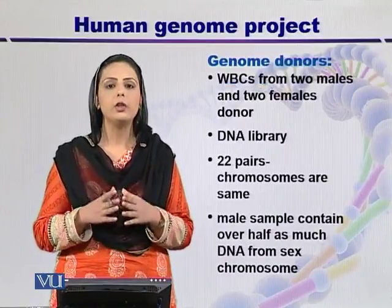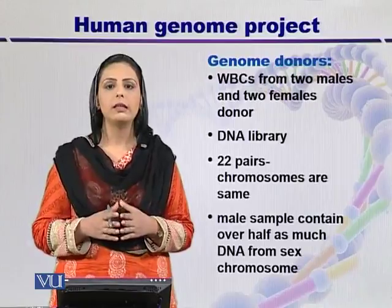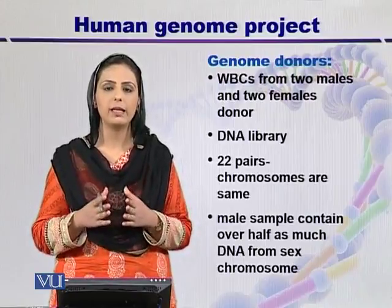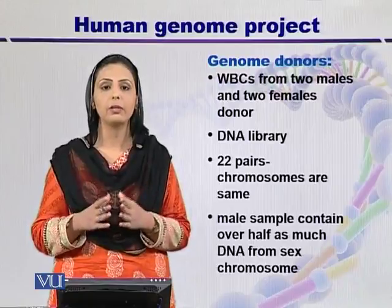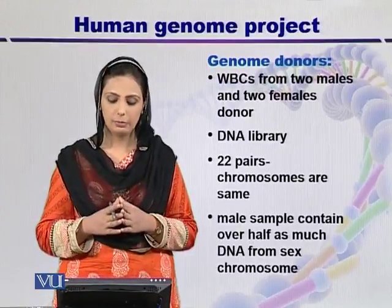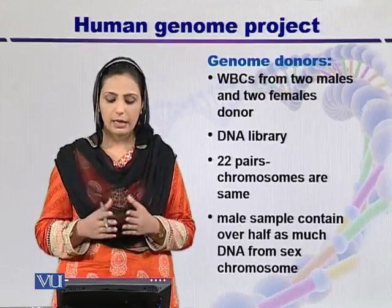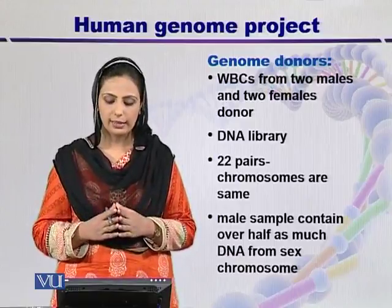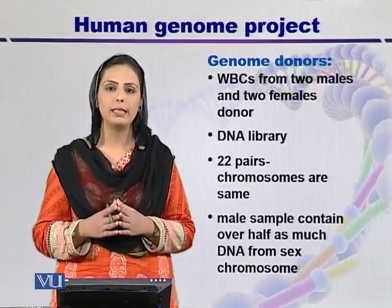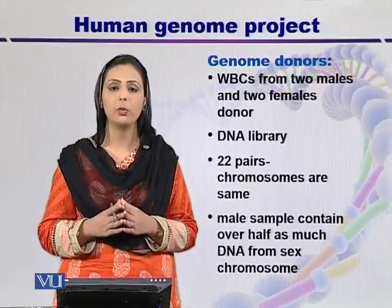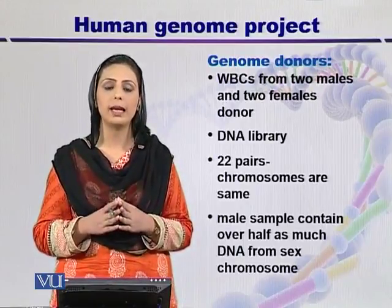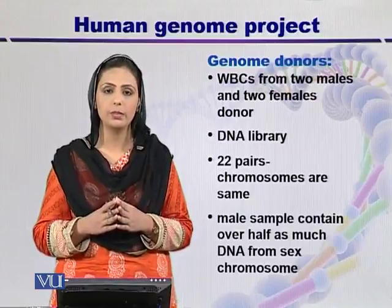In the Human Genome Project, the project was performed on white blood cells taken from blood samples of 2 males and 2 females in order to construct the DNA library. Human beings have 23 pairs of chromosomes — 22 pairs are autosomes and 1 pair is sex chromosomes.